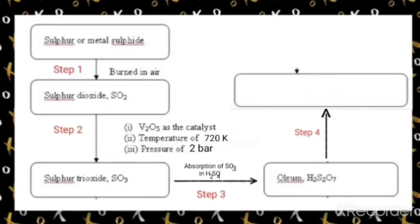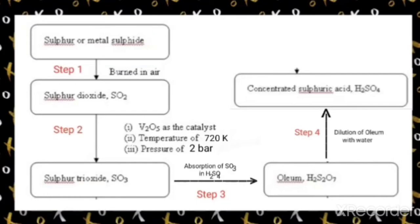In the third step, sulfur trioxide is converted into oleum by adsorption of SO₃ in 98% H₂SO₄, giving rise to oleum with formula H₂S₂O₇. In the fourth step, oleum is diluted with the required quantity of water to give concentrated sulfuric acid H₂SO₄ of any desired concentration.